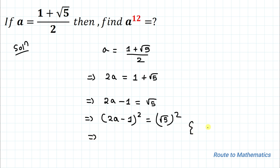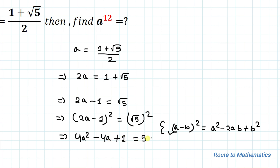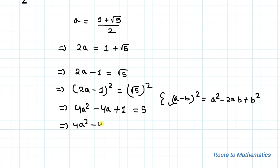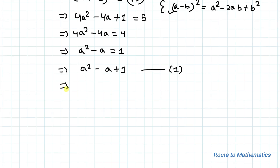So 2a minus 1 whole square equals to root 5 squared. Applying the algebraic identity (a - b)² = a² - 2ab + b², considering a as 2a and b as 1, we get 4a² minus 4a plus 1 equals to 5. This implies 4a² minus 4a equals to 4. Dividing both sides by 4, we get a² minus a equals to 1, so a² equals to a plus 1. Let's call this Equation 1.